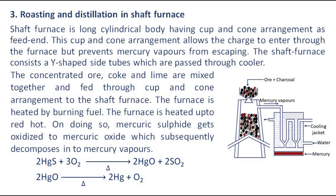The concentrated ore, coke, and lime are mixed together and fed through the cup and cone arrangement to the shaft furnace. The furnace is heated by burning fuel up to red hot. On doing so, mercuric sulfide gets oxidized to mercuric oxide, which subsequently decomposes into mercury vapors.